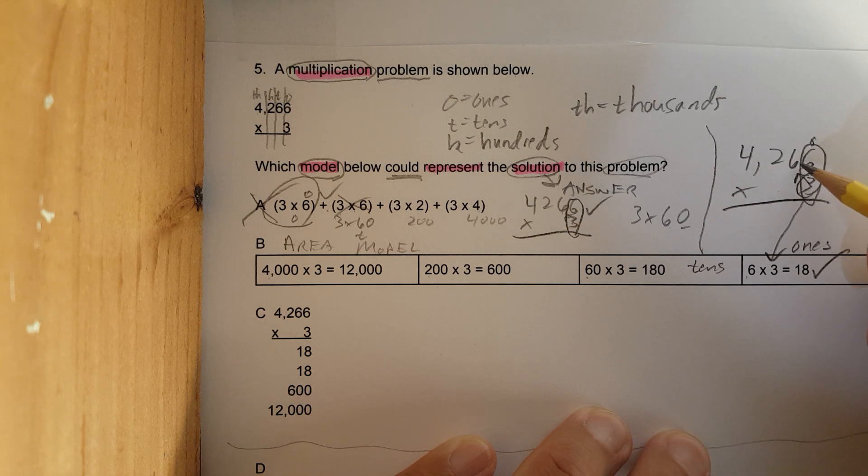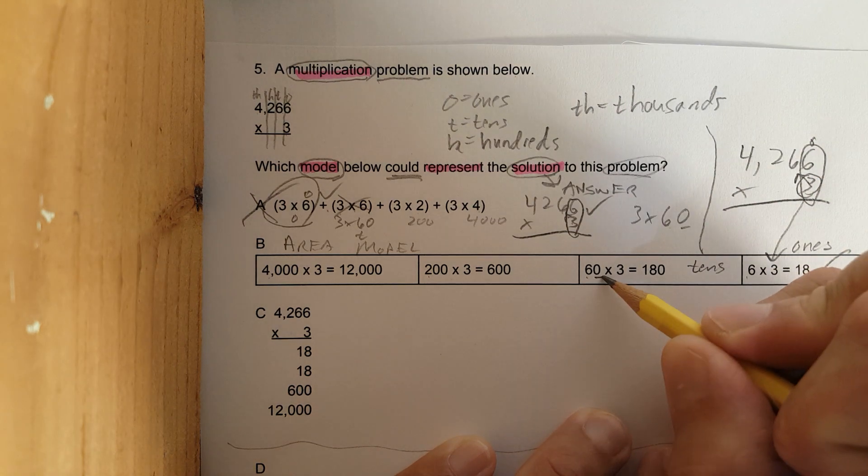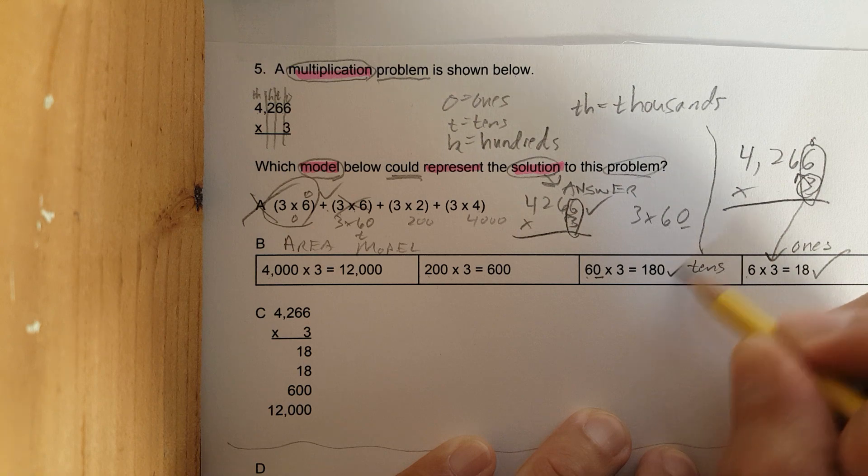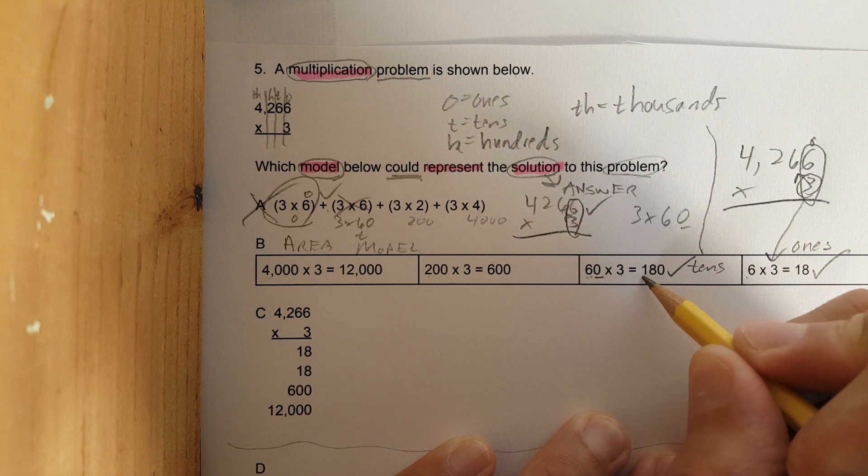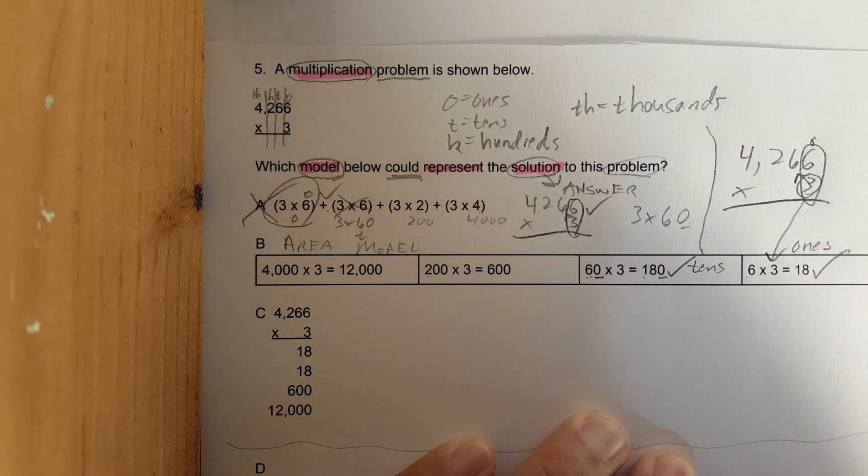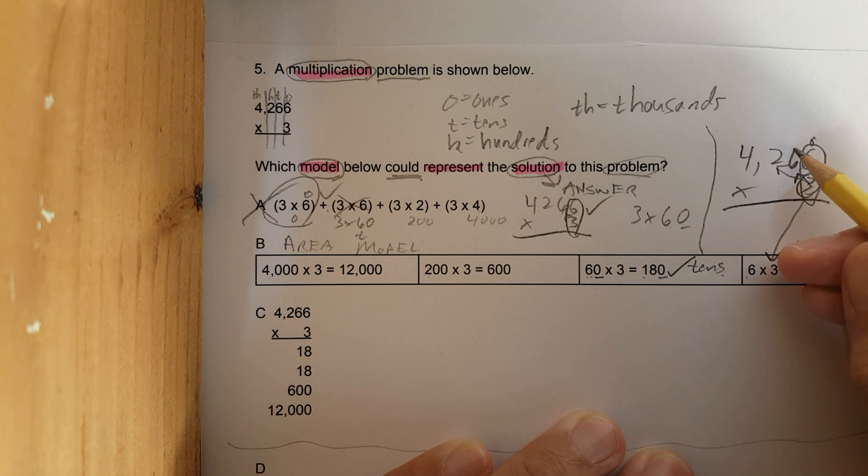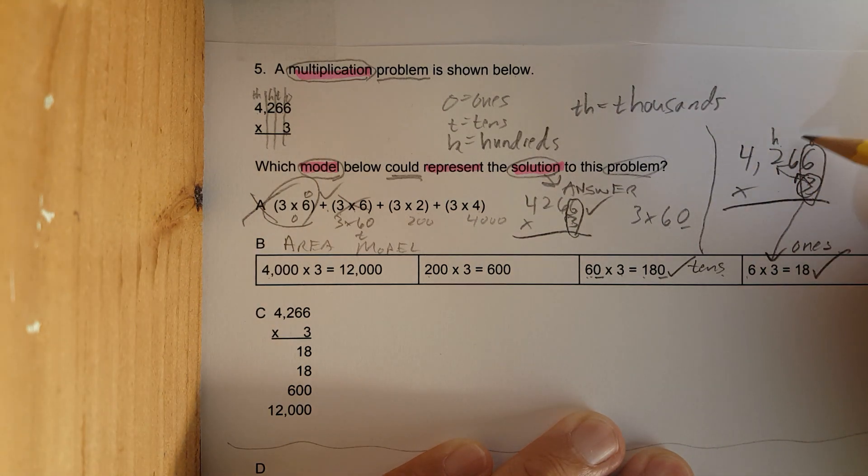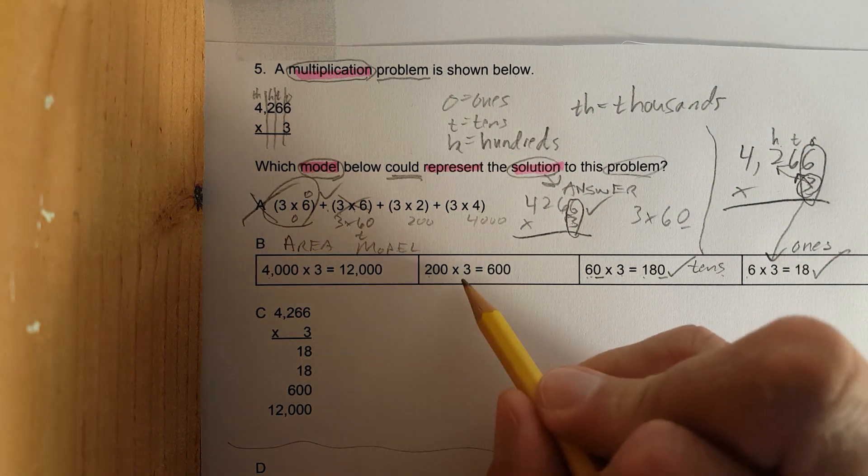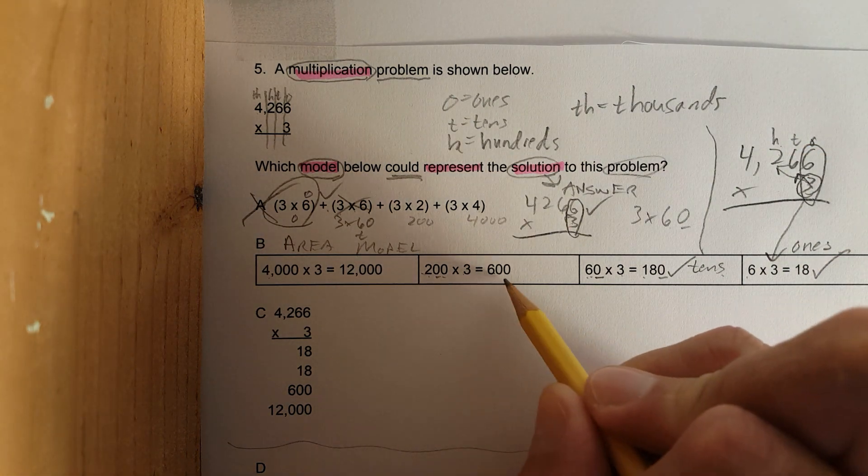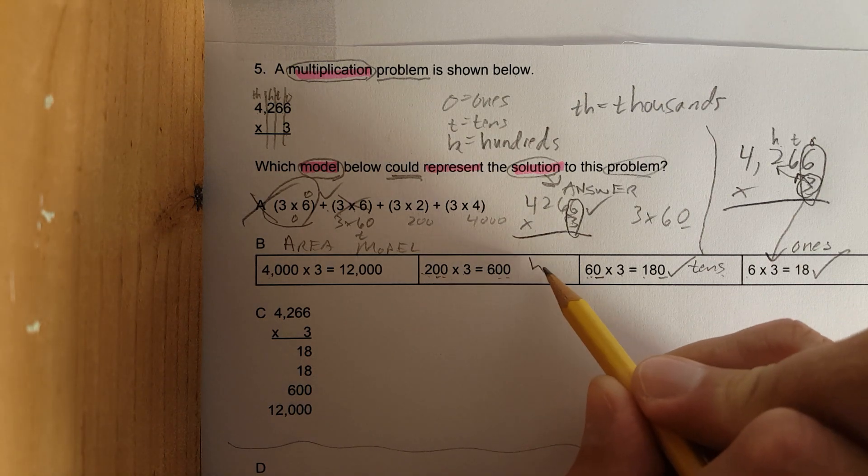Three times sixty. Check. Six times three is eighteen and I add a zero, so the ones is done correctly, the tens is done correctly. Next, you take three times two hundred. Ones, tens, hundreds. Three times two hundred makes sense. Three times two is six, they have the two zeros. Check. So the hundreds is done correctly.